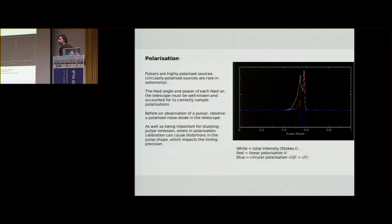So we saw pulsars being very highly polarized sources in the last lecture. Particularly circularly polarized sources are quite rare in astronomy, so pulsars are quite special in that regard. So this is something that we consider when we're taking observations as well. We have the two feeds that sample polarizations, and we need these to be calibrated in such a way that we can believe the true polarization coming out of the telescope.